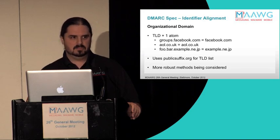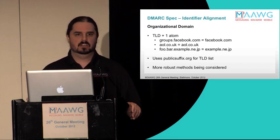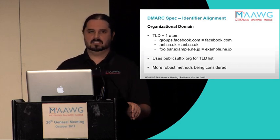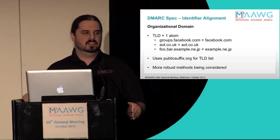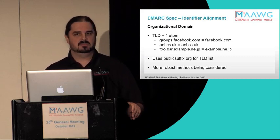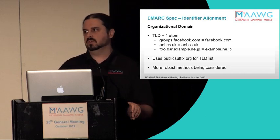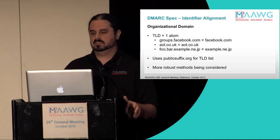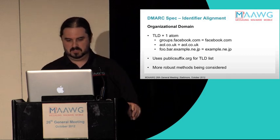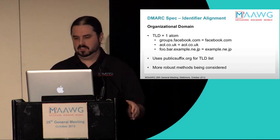Currently, we are advising people to use a service called publicsuffix.org for a TLD list for calculating organizational domains. That's part of the spec still up for debate, because that list is not as comprehensive or as well maintained as we would like for this to be a fully functioning spec. So far it's worked fine in testing, but we feel in the future we should future-proof this with something more robust. We have a few suggestions but nothing we're officially telling people to use yet.